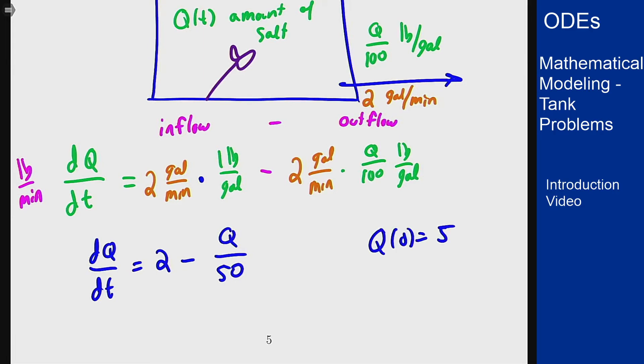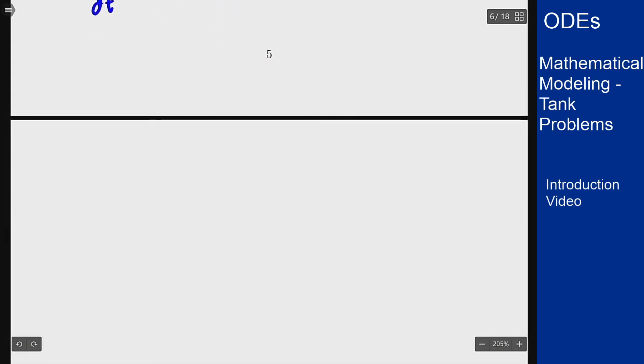Let's rewrite this as a first order linear equation by moving the Q over 50 to the other side. I end up with Q' + Q/50 = 2.